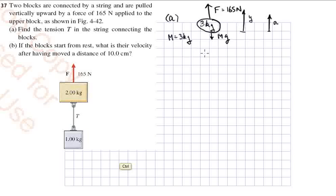So time for Newton number 2, which tells you that the total mass, remember M stands for 3 kgs, times the upward acceleration is equal to the net upward force. So that's F minus M, G. In other words, it's 165 Newtons minus M times G.